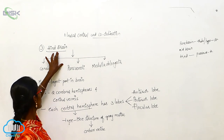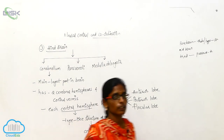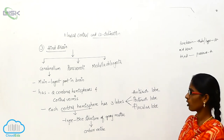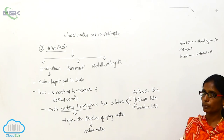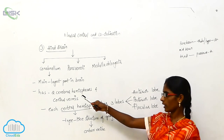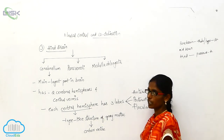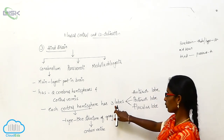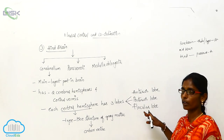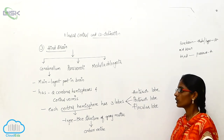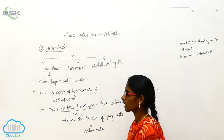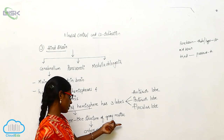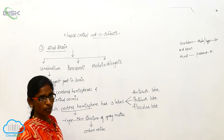To summarize: the hindbrain divides into three parts — cerebellum, pons varoli, and medulla oblongata. The cerebellum is the main and largest part of the brain, with two cerebral hemispheres and a central vermis. Each cerebral hemisphere has three lobes: anterior, posterior, and flocular. The cerebral hemisphere has a tree-like structure of grey matter, called arborvitae.